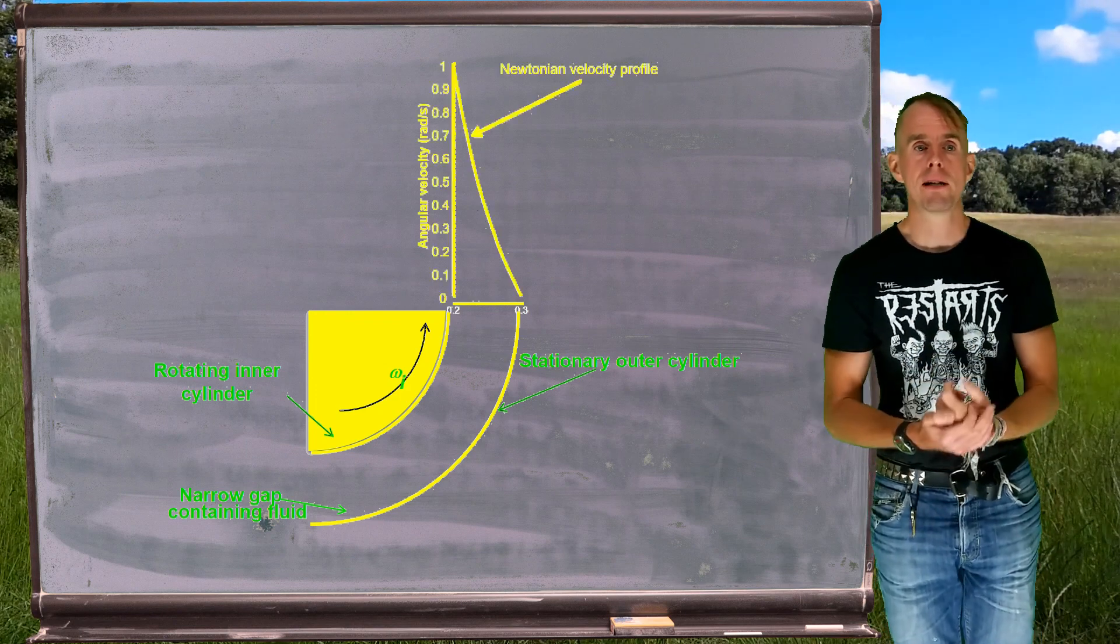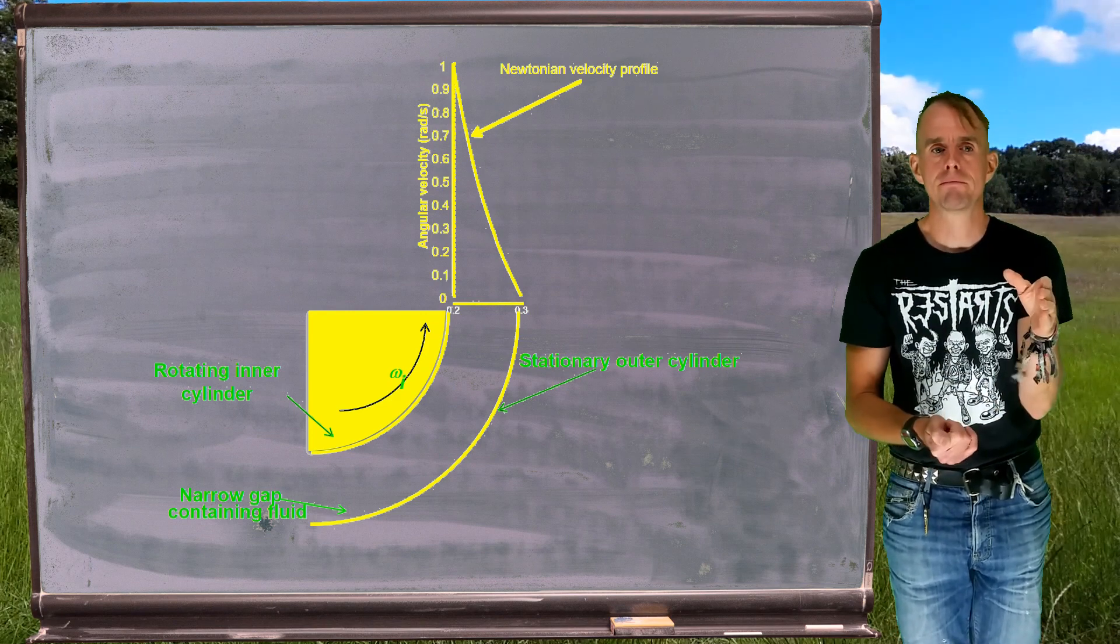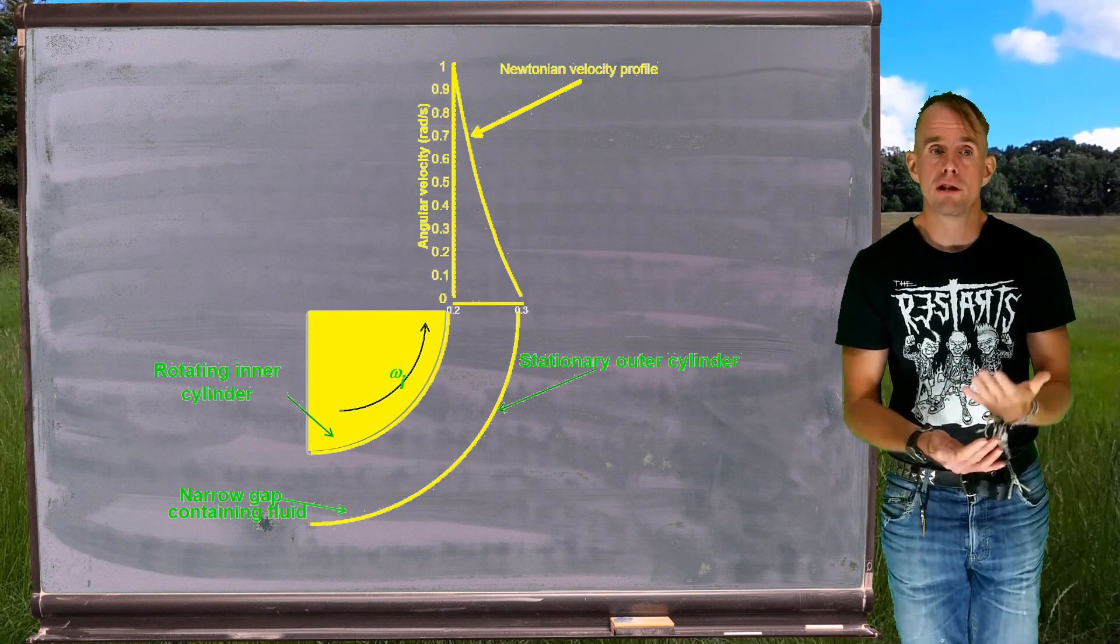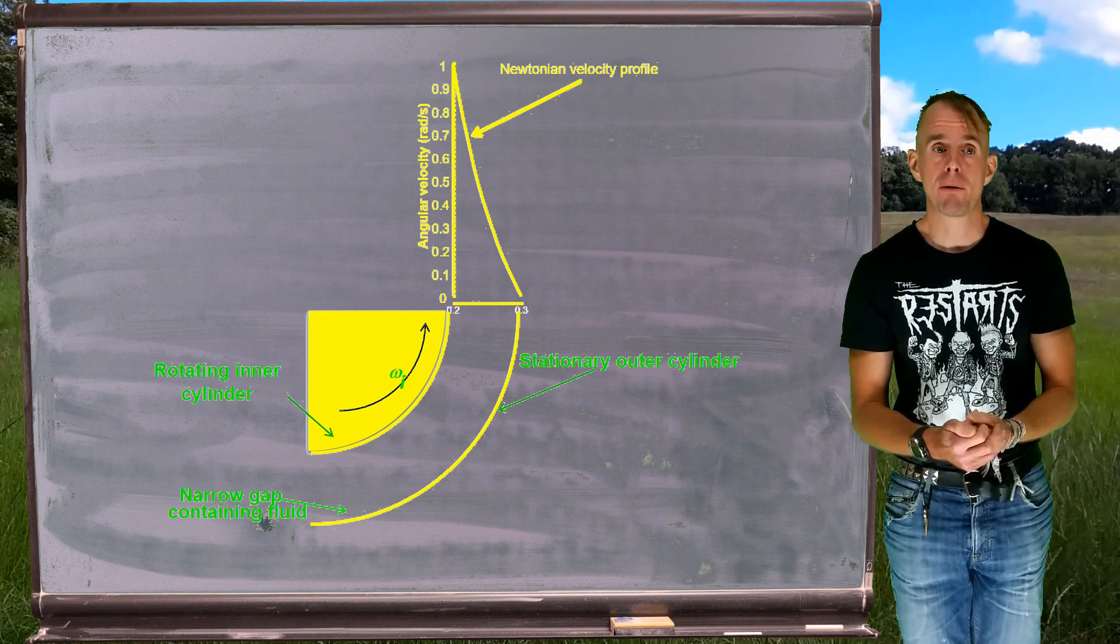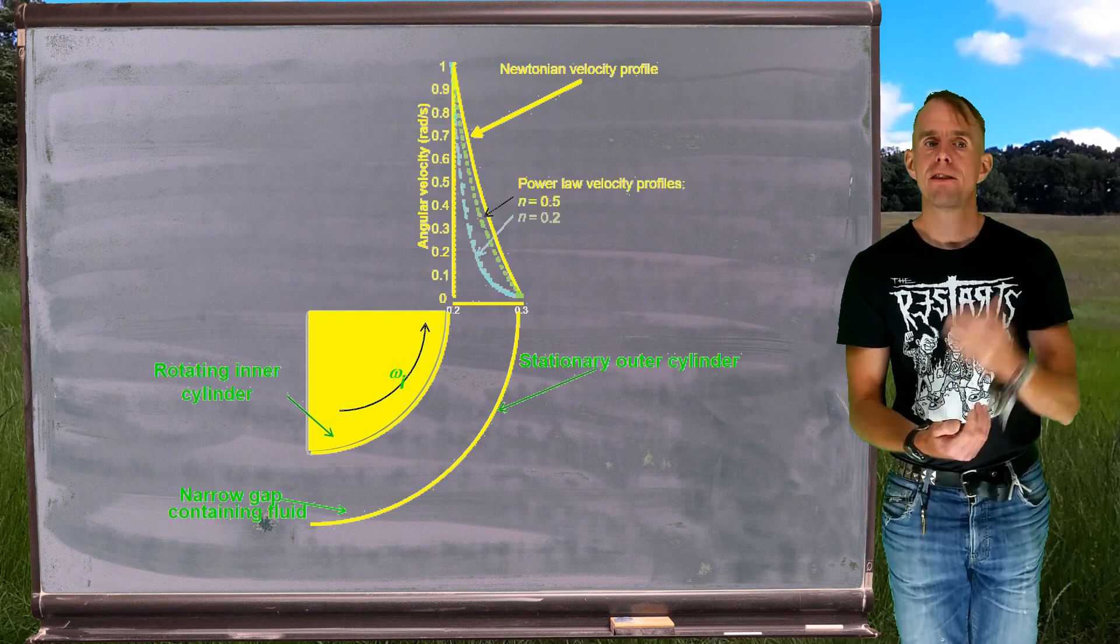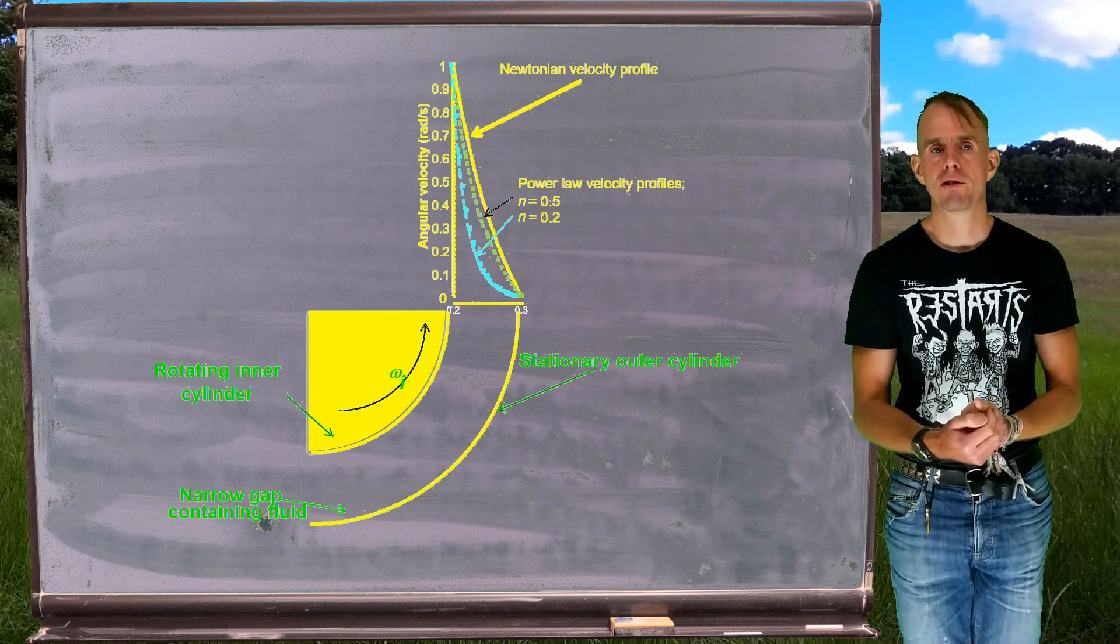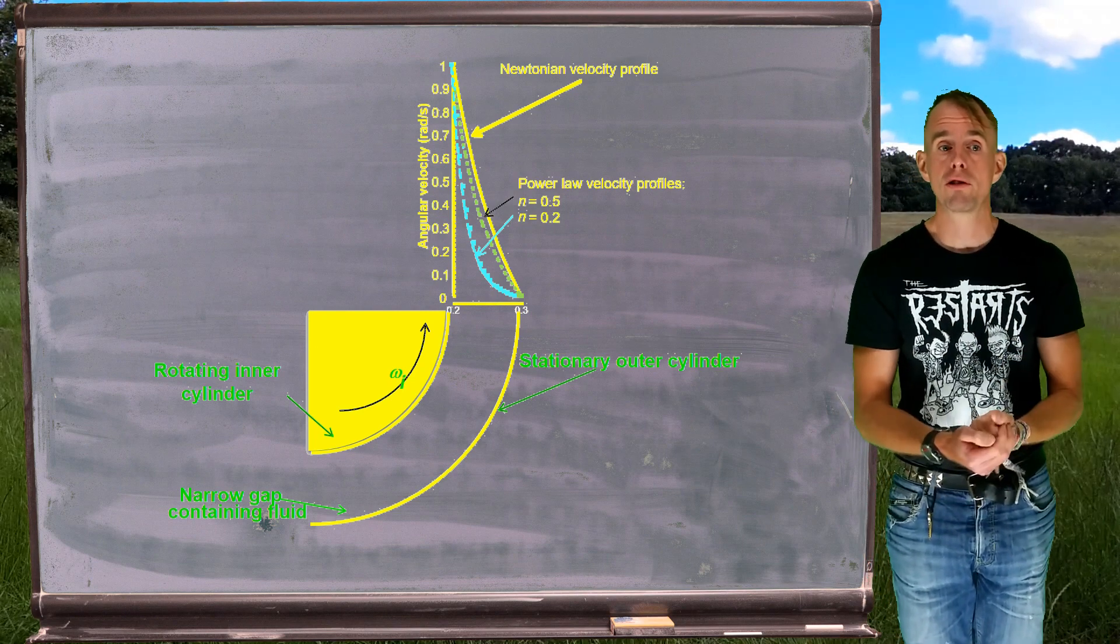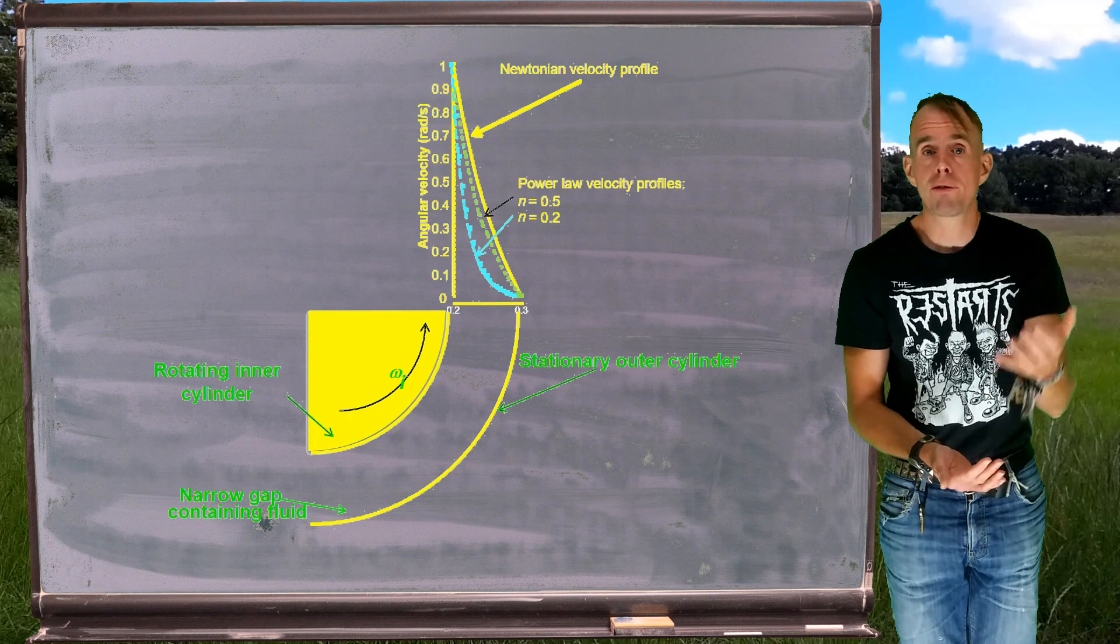So the graph that appears is plotting the absolute velocity as a function of location within the gap, inner surface to outer surface. And the yellow line on that graph is what we see with the Newtonian fluid, or by setting n equals to 1 in our result for a power law fluid. However, as we change n, we find that the further we get away from that inner cylinder, the more the fluid becomes stationary. Until we can see that, for example, with that blue curve, where n equals 0.2, we have a substantial reduction in angular velocity in over half the width of the gap.